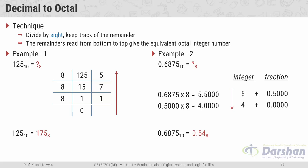If you remember, in decimal to binary conversion we divide by 2, and here we divide by 8. In general, to convert a decimal number to any other system, divide by the base of that system — 2 for binary, 8 for octal. Similarly, for the fractional part, multiply by the base: 2 for binary, 8 for octal.